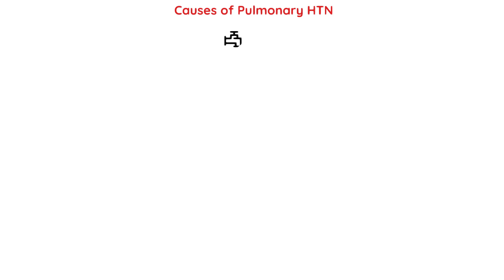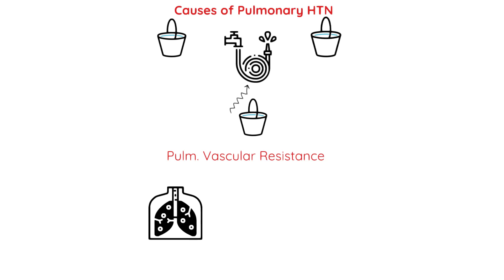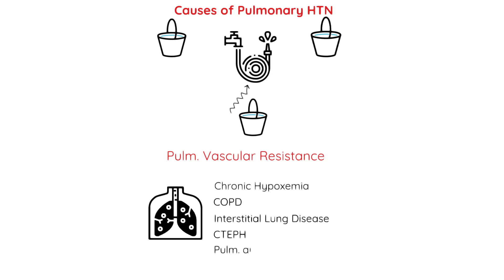In thinking of the causes of pulmonary hypertension, picture a garden hose. It's helpful to think of three big buckets of different pathophysiologic insults that can cause elevated pulmonary pressures. In the first bucket, we have things that increase resistance within the pulmonary vasculature — think of kinks within the actual hose that raise the pressure. This includes chronic hypoxemia causing vasoconstriction, diseases like COPD, interstitial lung disease, chronic thromboembolic pulmonary hypertension (CTEPH), and pulmonary arterial vasculopathy, aka PAH.